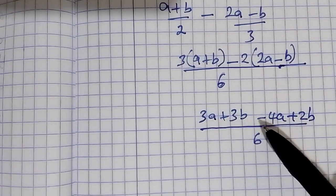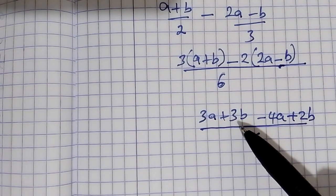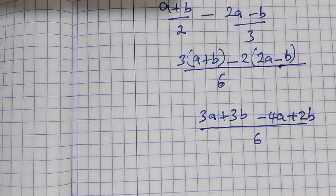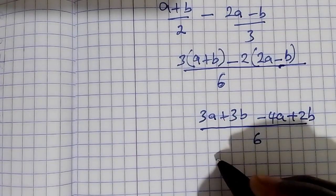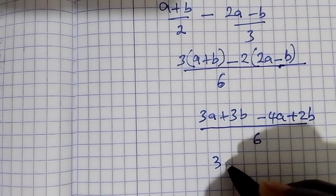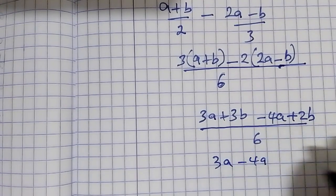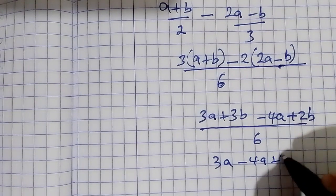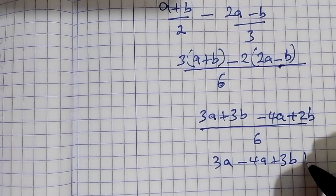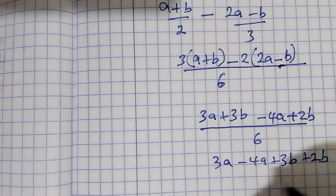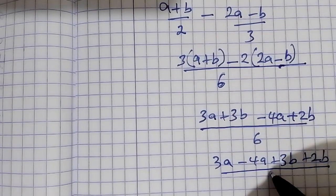3a minus 4a plus 3b plus 2b. So that's going to be 3a minus 4a plus 3b plus 2b over 6.